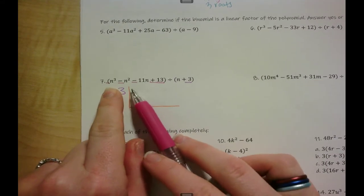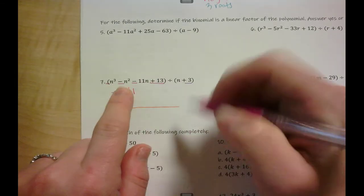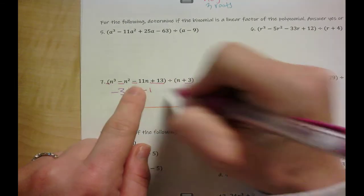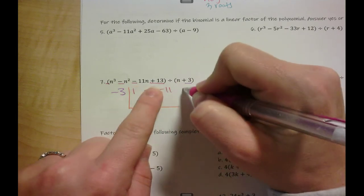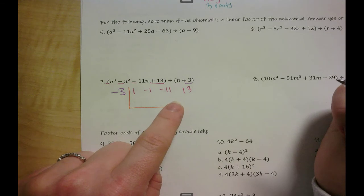Remember that my signs travel with, so this is just positive one. This one's going to be negative one, negative eleven, positive thirteen. Remember my signs travel with my numbers.